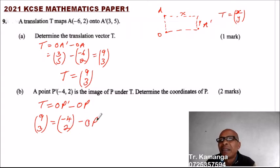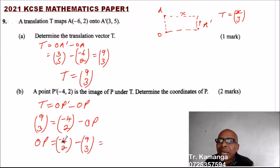OP equals, taking it to the other side, (-4, 2) minus (9, 3), which equals -4 minus 9 is -13, and 2 minus 3 is -1.